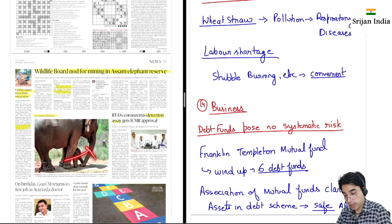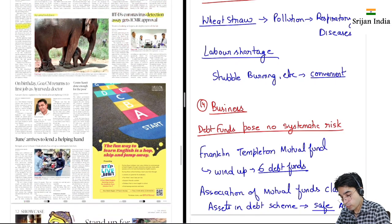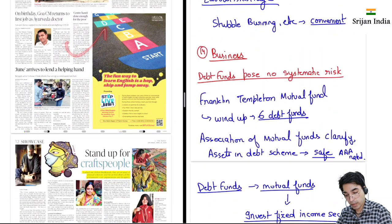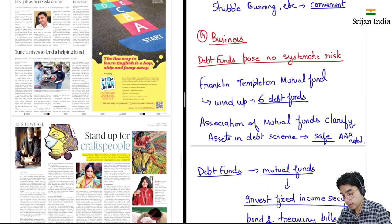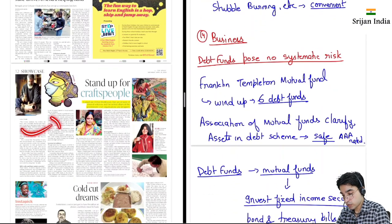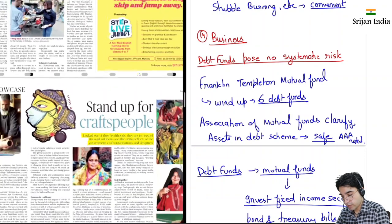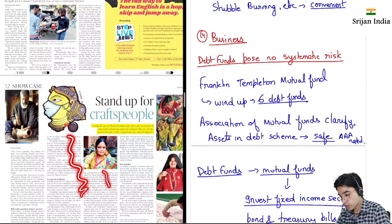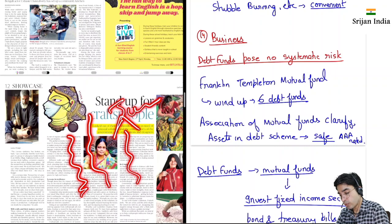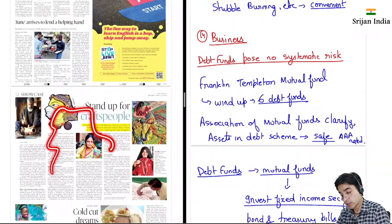IIT Delhi ne ek detection assay develop kiya hai — isse ICMR ka approval hoga. Then yeh showcase — stand up for crafts people. Crafts people matlab yeh jo handicrafts and all jo banate hain, inko bhi abhi job losses ho rahe hain, revenue nahi aa rahe, employment opportunities inke paas zero hoti ja rahi hai.